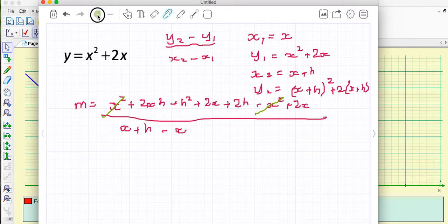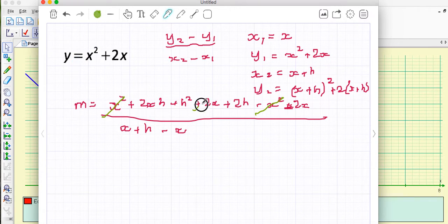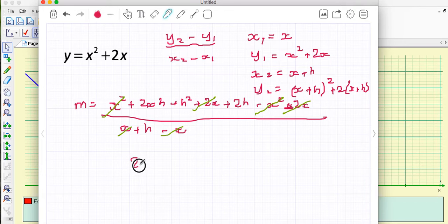I've made a little mistake here. This was actually a minus 2x here because it was minus x1. And I know I've got a mistake because this cancels off, this cancels off with this and this cancels off with this. So now I am left with something a lot simpler I am left with 2xh plus h squared plus 2h all over h.